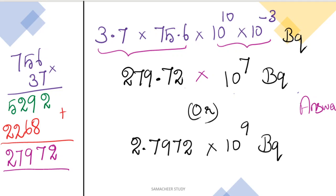This is the scientific notation. In scientific notation, the first value must be less than 10. Converting the result: 279.72 × 10^7 becquerel, which in proper scientific notation is 2.79 × 10^9 becquerel. Either form is acceptable as the answer.